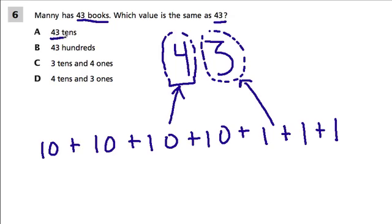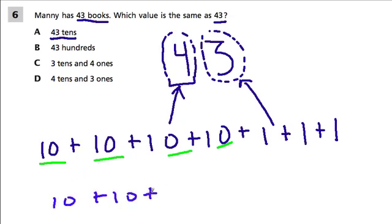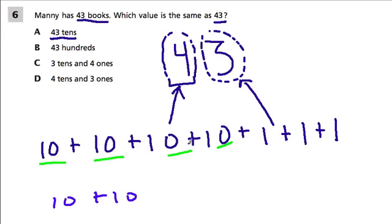The first option says 43 tens. That's a really big number. With 43 we only have four tens. If we had 43 tens, that would be another 39 tens going right off the page — 10, 10, 10 and so forth all the way to 43. 43 tens is like having 430, because every hundred has 10 tens: 400 has 40 tens, and 30 has three tens. So 43 tens equals 430 — that's not what we have.